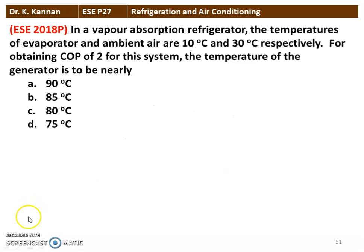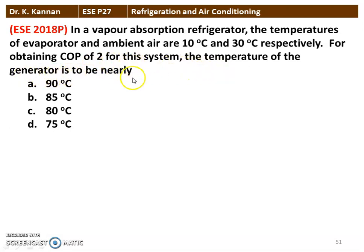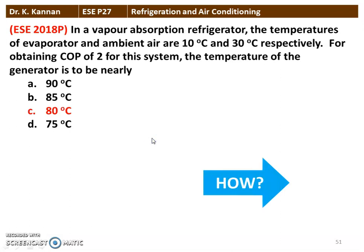The next question from the 2018 question paper: In a vapor absorption refrigerator, the temperature of the evaporator and ambient temperature are 10 degree Celsius and 30 degree Celsius respectively. For obtaining a COP of 2 for this system, the temperature of the generator is to be nearly — there are 4 options. The correct answer is 80 degree Celsius. We will see how in the next slide.